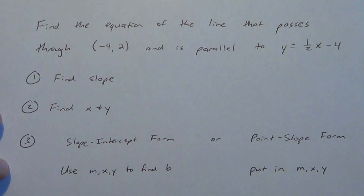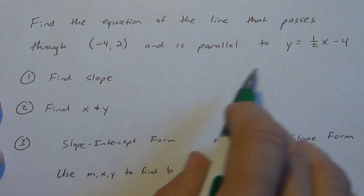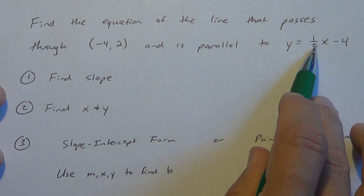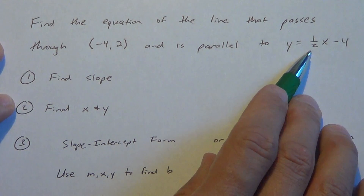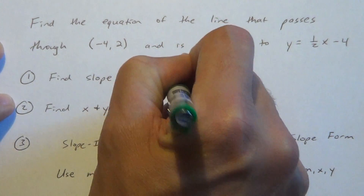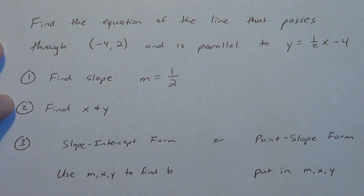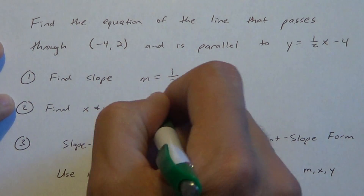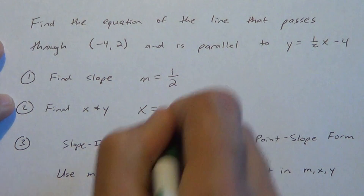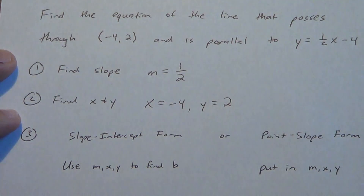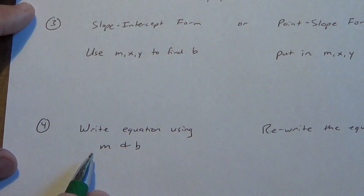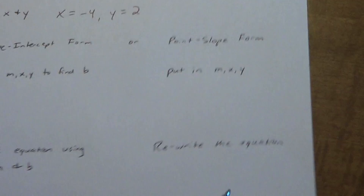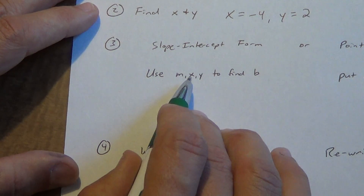There are basically four steps to solve these types of problems. Step one: always find the slope. In slope-intercept form y = mx + b, m is your slope. Parallel lines have equal slopes, so if the given slope is 1/2, our new slope is also 1/2 — m equals 1/2. Step two: find x and y from the given point. x equals negative 4 and y equals 2.